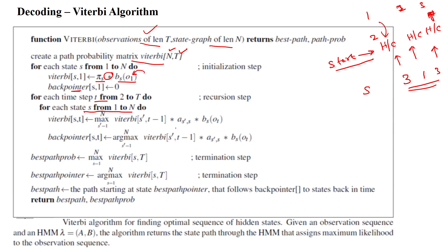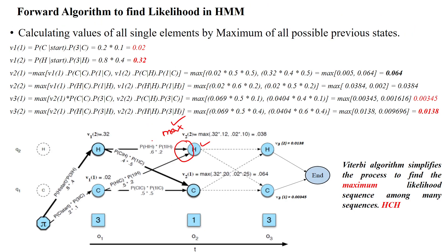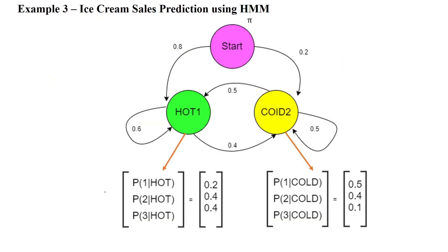When moving through states, you use the previous probability value, the state transition value, and the emission value. From these you select the maximum value among the different paths. Based on that, we also calculate the back pointer to move into the next state. Once you have calculated all the values you find the maximum probability, and after reaching the maximum probability you can stop the algorithm.